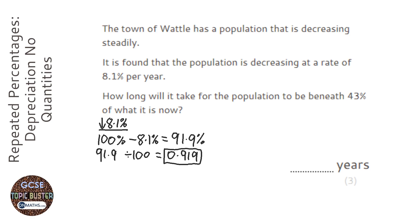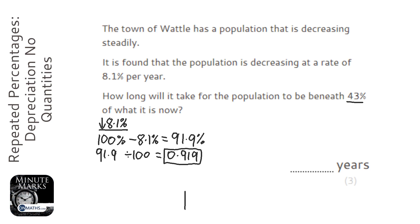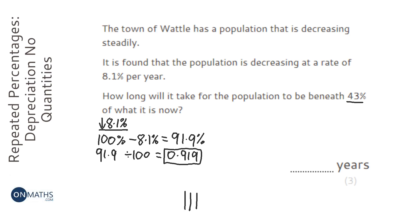Now we're going to use the calculator to work out how long it takes to go beneath 43%. We start by typing in 0.919 and pressing equals — that stores it and represents one year. Then we times it by 0.919 again for the second year, press equals, and pressing equals again gives the third year. At 0.84 it's nowhere near, then 0.77, 0.71, 0.65, 0.60 — we're getting close.